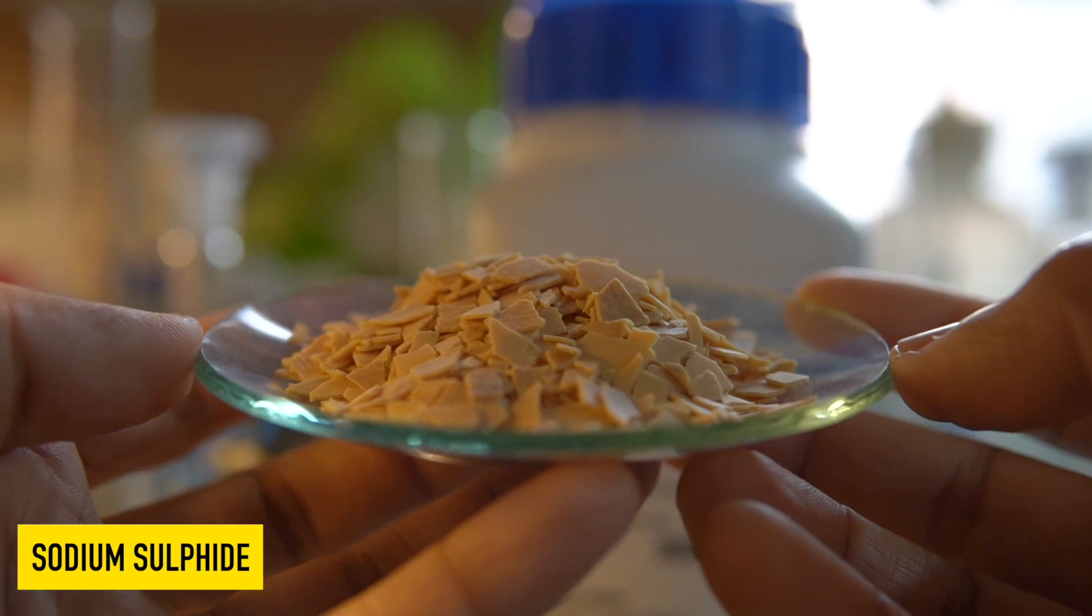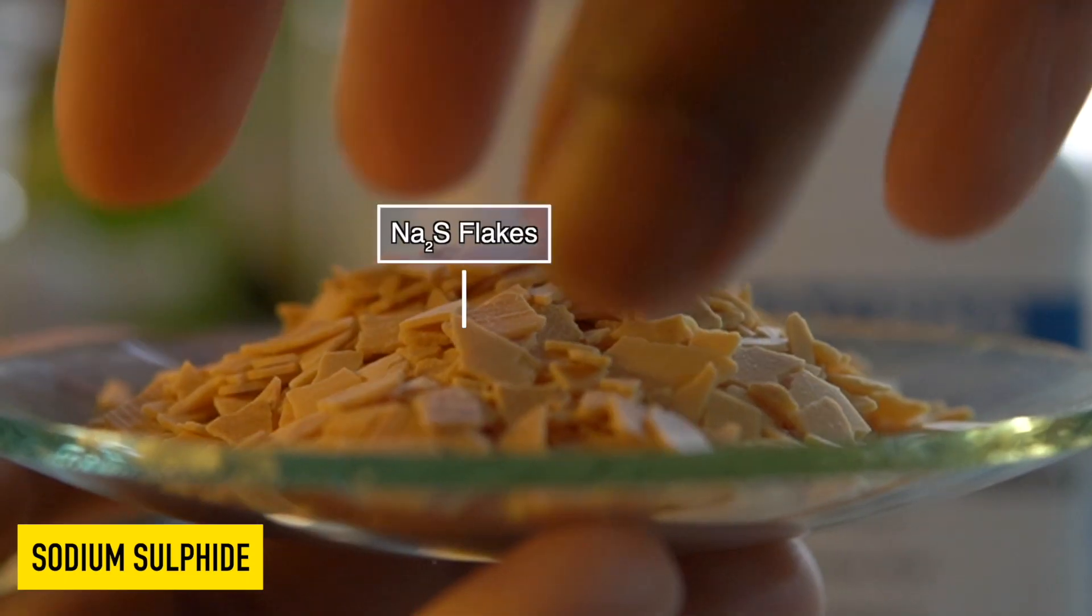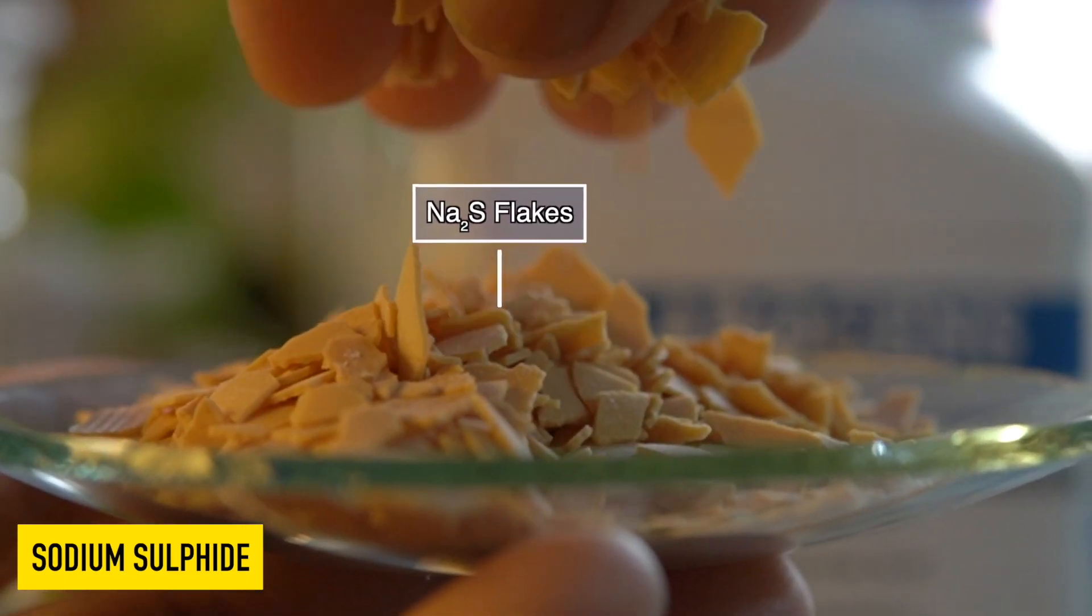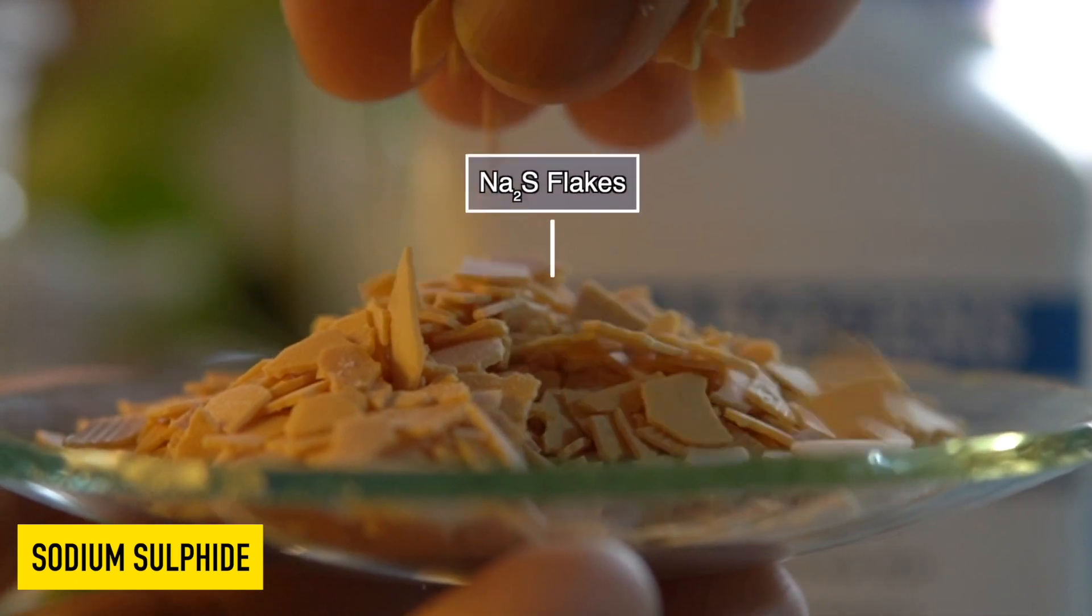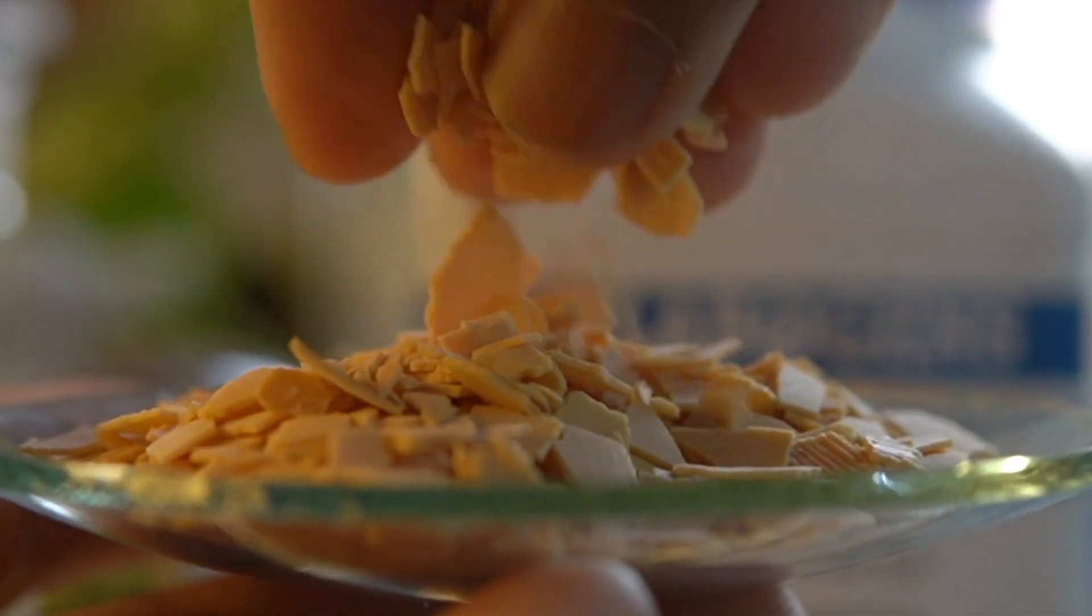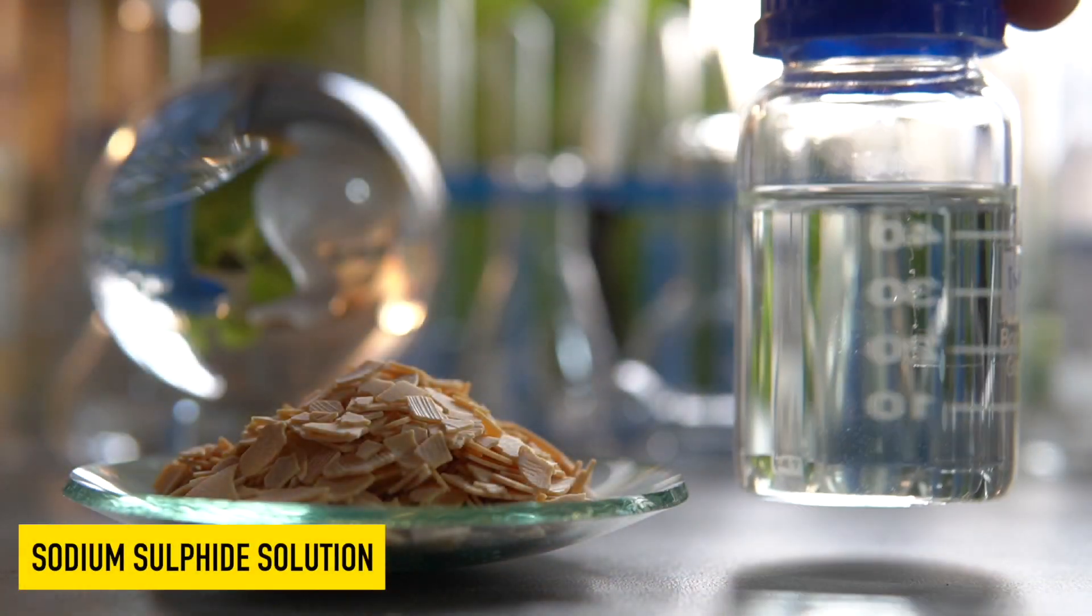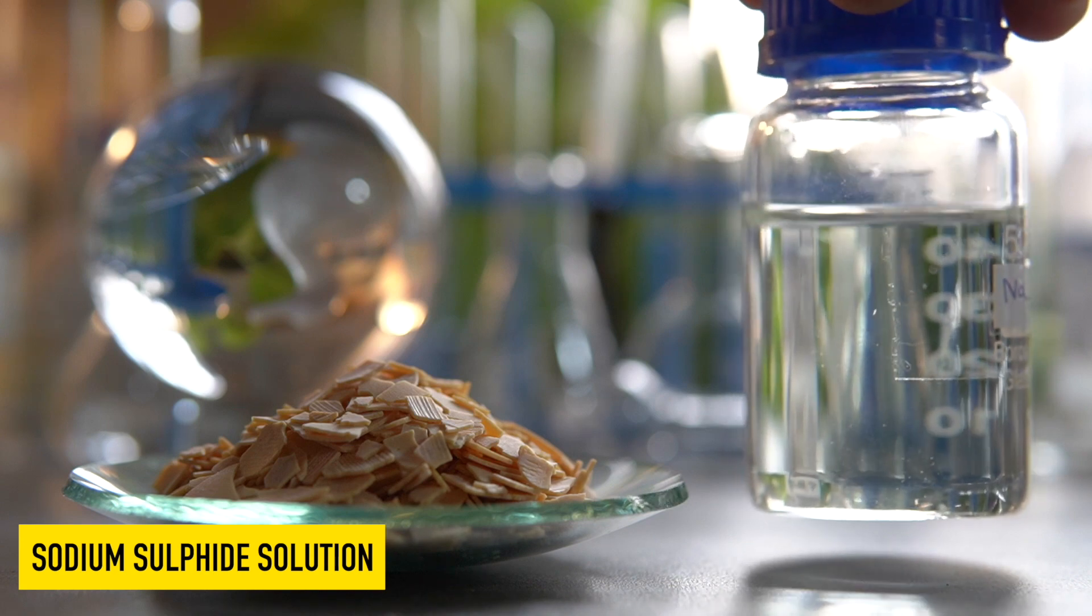These are sodium sulfide flakes. They are slightly yellowish in color and highly soluble in water. They can easily dissolve in water to make a clear colorless solution.